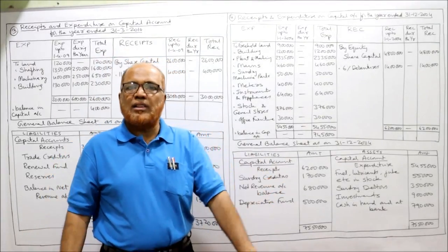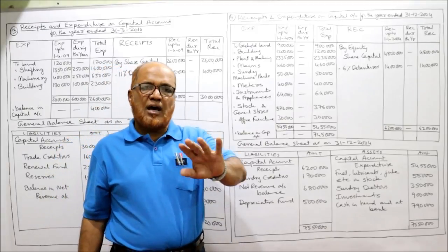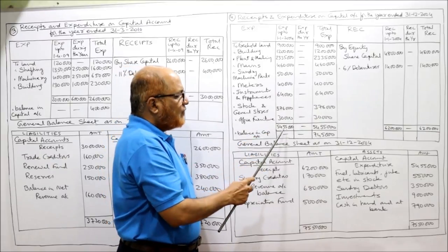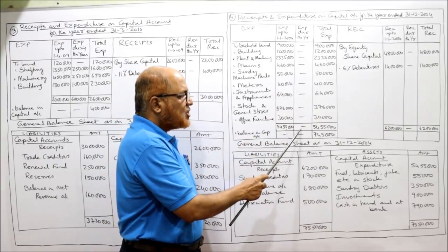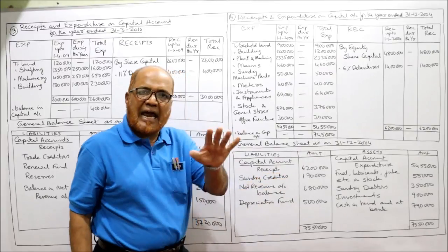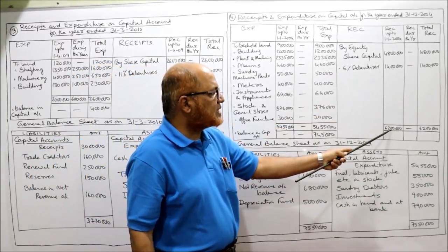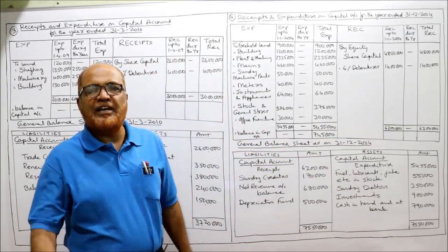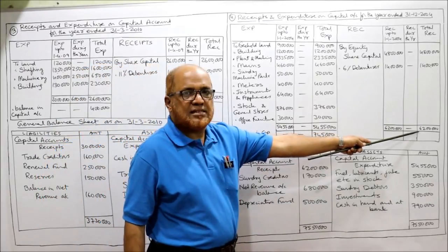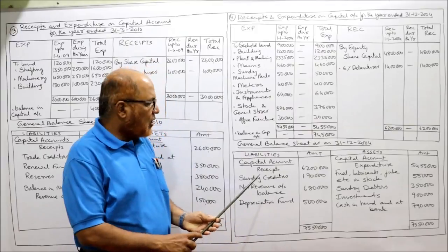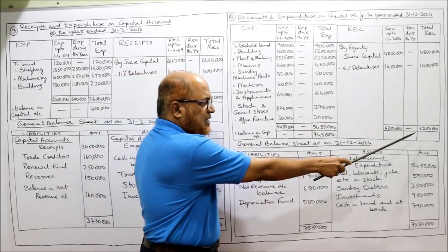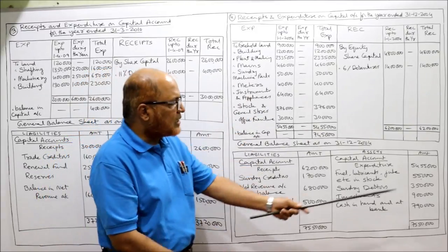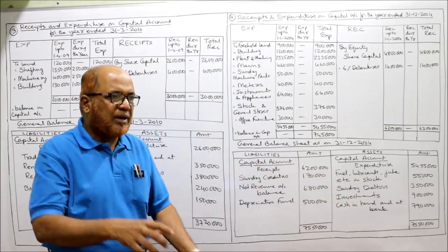Total expenditure: 54 lakh 55 thousand at the beginning of the year, no additions during the year, so total remains 54 lakh 55 thousand. Receipt side: beginning of the year 62 lakh, no issues during the year, total 62 lakh. The total receipts (62 lakh) are taken on the liability side under capital account, and total expenditure (54 lakh 55 thousand) is taken on the asset side.